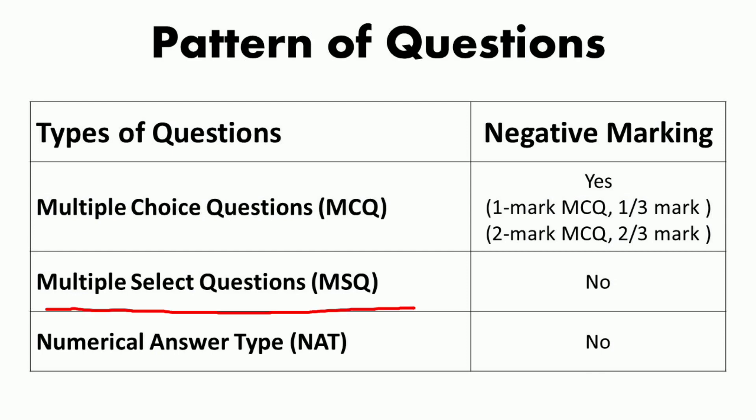Multiple select questions (MSQs) carry 1 or 2 marks each. These are also objective in nature, with 4 answer choices where 1 or more choices may be correct. There is no negative marking for wrong answers in MSQ questions; however, there is no partial credit for choosing a partially correct combination of choices or any single wrong choice.